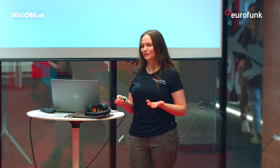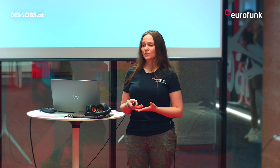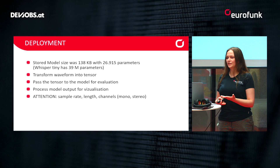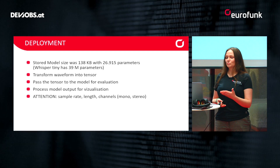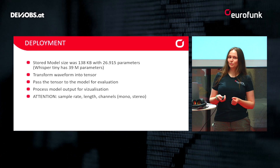The one thing you have to care about when handling audio is the sample rate, the length, and the amount of channels. If you have the wrong sample rate and pass it to your model, you'll wonder why nothing is recognized correctly — it's just because the model only understands one sample rate. This model is trained on a sample rate of 8,000 per second, so you just have to keep that in mind, and if you do, you will have no problems.